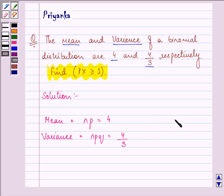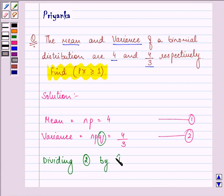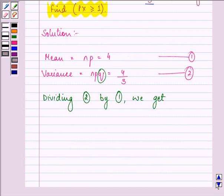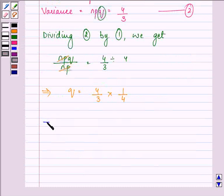Now, if we divide, let this be the first equation, let this be the second equation. If we divide the second equation by the first equation, we will get the value of q. So dividing the second equation by the first equation, we get npq upon np equal to 4 by 3 divided by 4. This implies q is equal to 4 by 3 into 1 by 4. That implies q is equal to 1 by 3.